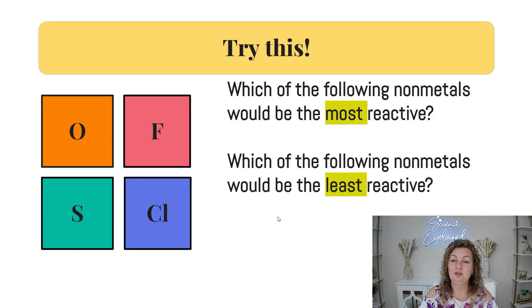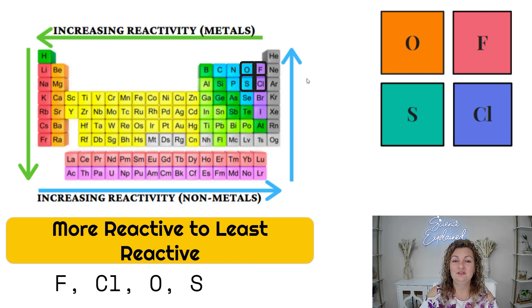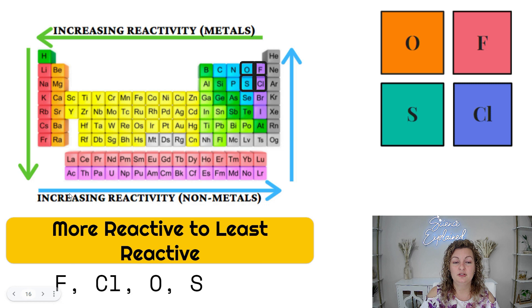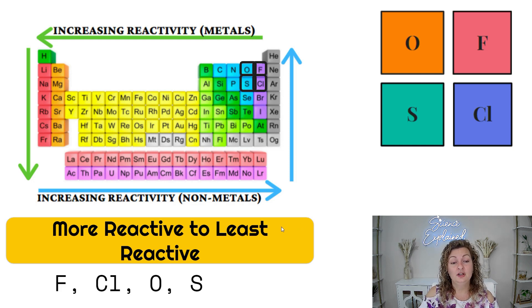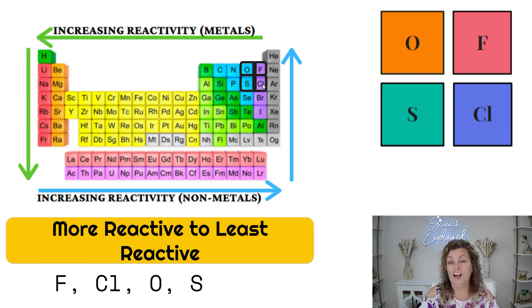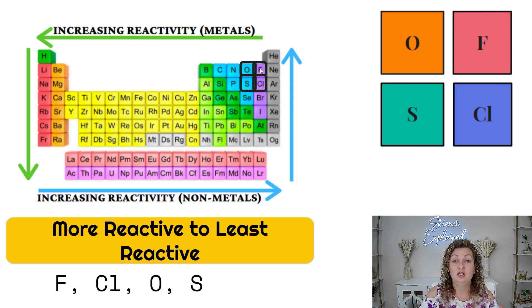Which of the following nonmetals would be the most reactive and which would be the least reactive? Looking at where these elements are on the periodic table: reactivity increases going up and to the right, so we draw that diagonal arrow to the upper right-hand corner. Going from most reactive to least reactive, it's fluorine being the very most reactive — halogens will always come first. Then we go to chlorine, then oxygen, then sulfur. Just remember: halogens are definitely going to win out against the oxygen family any day.